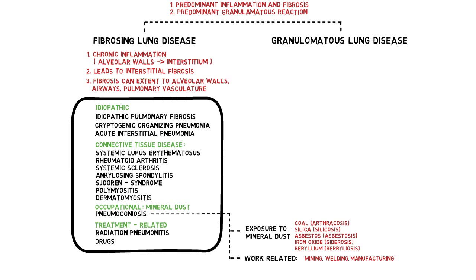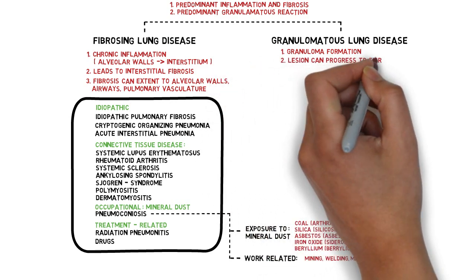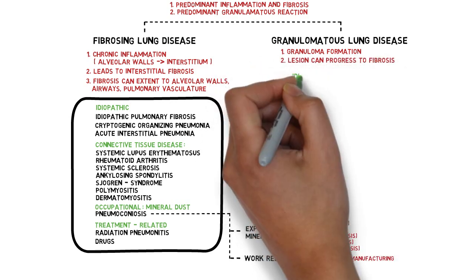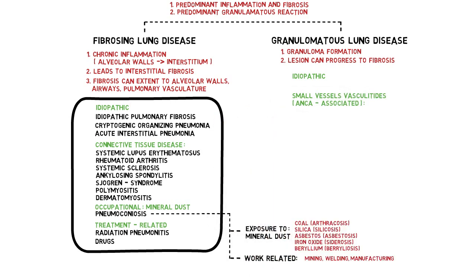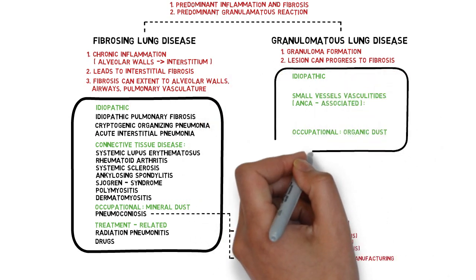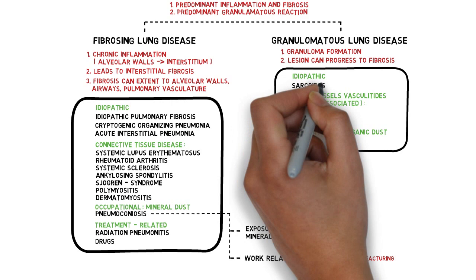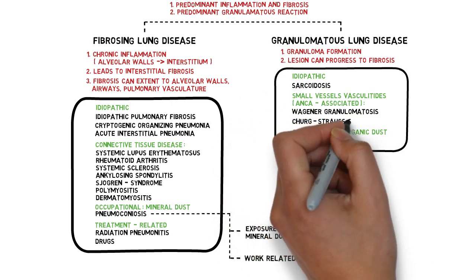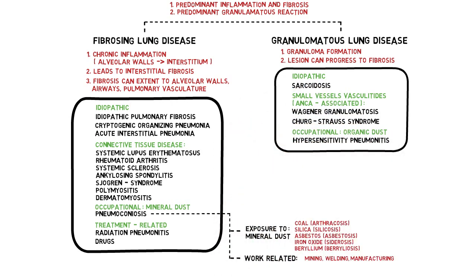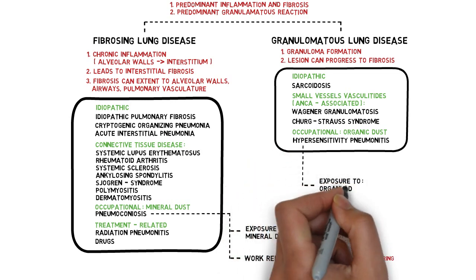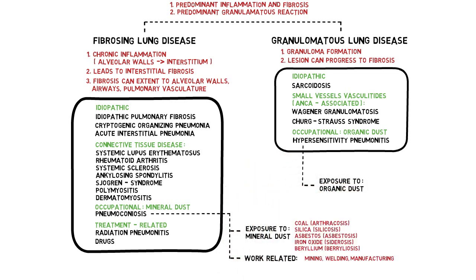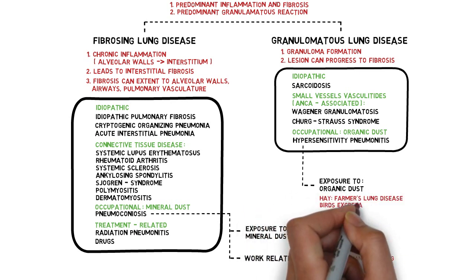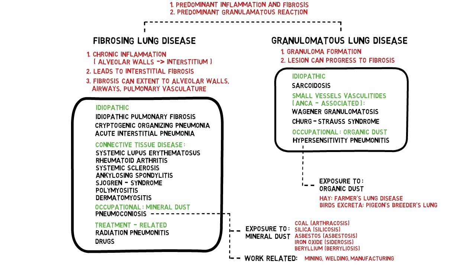For granulomatous lung disease, there is formation of granulomas usually accompanied by fibrosis. Causes are divided into idiopathic, small vessel vasculitis, and occupational lung disease. Examples are sarcoidosis, Wegener's granulomatosis, and hypersensitivity pneumonitis. Hypersensitivity pneumonitis is associated with prolonged exposure to organic dust — for example, exposure to hay causes farmer's lung disease, and bird excreta causes pigeon breeders' lung.